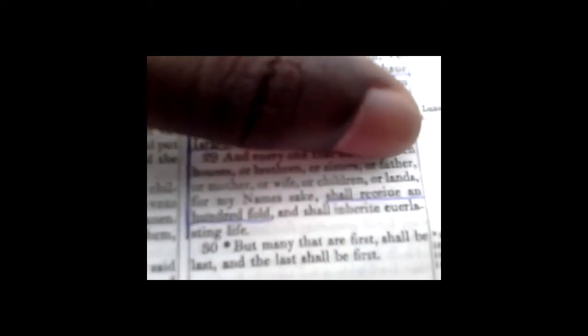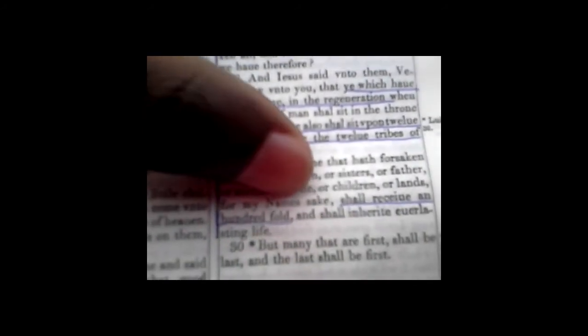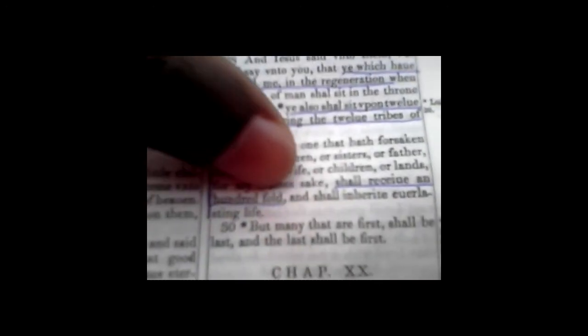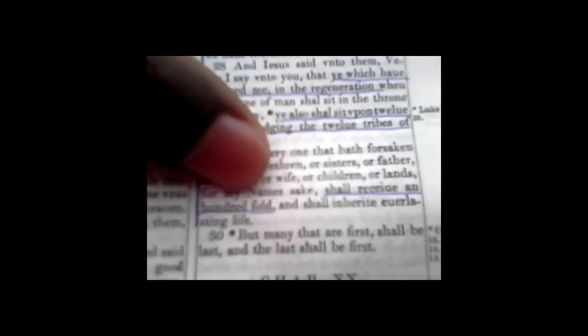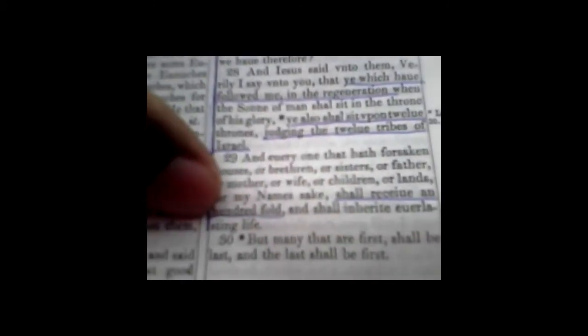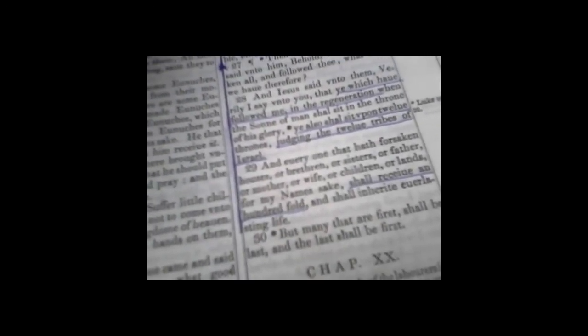And everyone that has forsaken houses or brethren or sisters or fathers or mother or wife or children or lands for my name's sake, which is Yahushua—no other name—shall receive a hundredfold. You're going to receive a hundredfold that you sacrifice for Yahushua and shall inherit everlasting life. You're going to enjoy it forever.